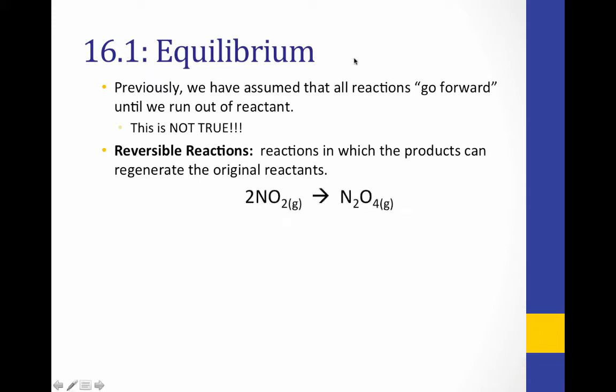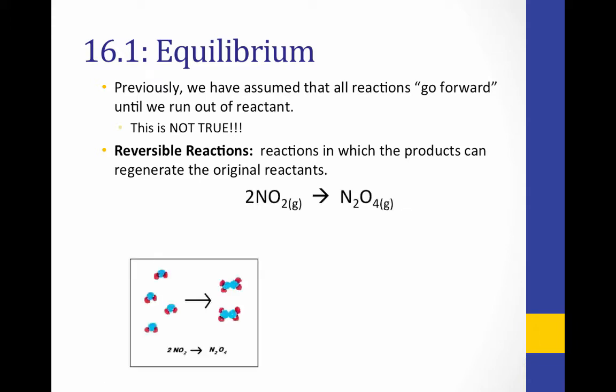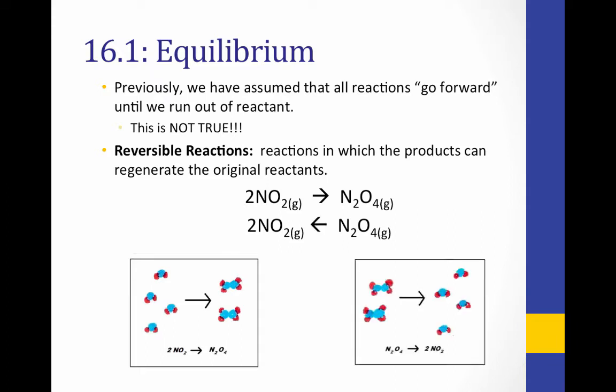For example, given this reaction here — 2 moles of NO2 yielding 1 mole of N2O4 — this reaction is reversible, meaning it can also run in the opposite direction. 1 mole of N2O4 can break down to form 2 moles of NO2.